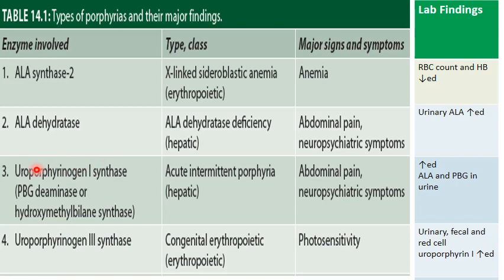The third enzyme is uroporphyrinogen-1 synthase, also called porphobilinogen deaminase or hydroxymethylbilane synthase. Deficiency leads to acute intermittent porphyria, included in the hepatic category. Due to accumulation of ALA and PBG, there is abdominal pain and neuropsychiatric symptoms. Lab findings show increased ALA and PBG in the urine.